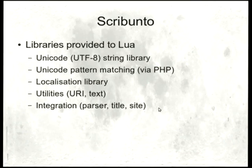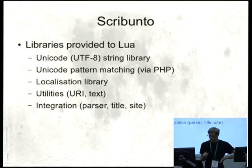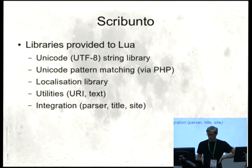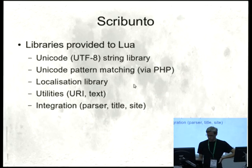Here's a list of libraries we provide to Lua. We have a Unicode string library — Lua is 8-bit clean like PHP, so we pass around raw UTF-8 strings, and this library gives you substring functions and things like that. We also provide Unicode pattern matching that uses a pattern syntax similar to the Lua pattern syntax, which we convert to PCRE and run in PHP. We provide a localisation library covering things like plurals, numbers, and messages from MediaWiki — basically MediaWiki's view of localisation wrapped into Lua. Plus a few utilities for handling URIs and text, and some libraries for integration with MediaWiki that are more specific to us.